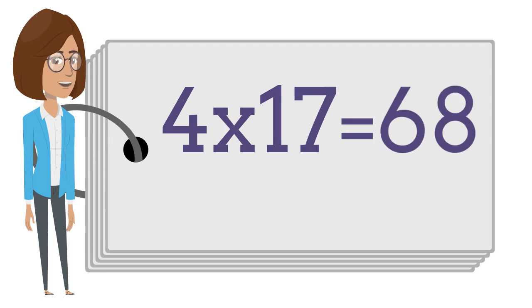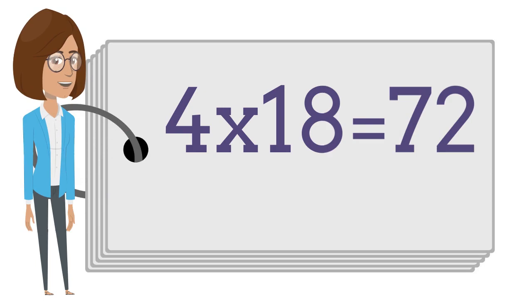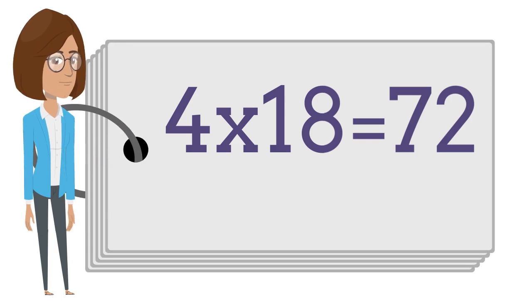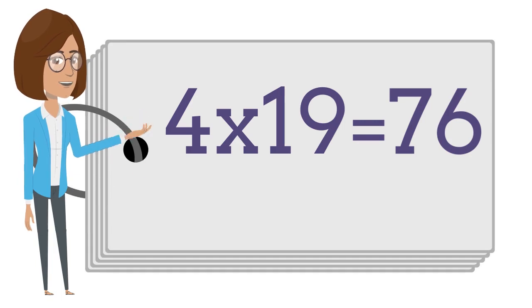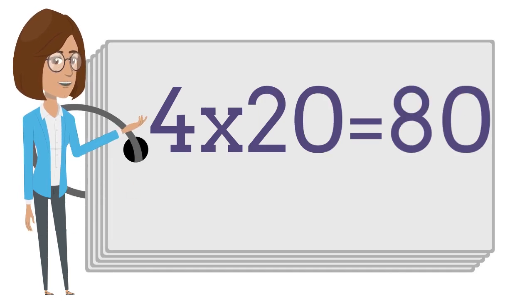4 times 17 is 68. 4 times 17 is 68. 4 times 18 is 72. 4 times 18 is 72. 4 times 19 is 76. 4 times 19 is 76. 4 times 20 is 80. 4 times 20 is 80.